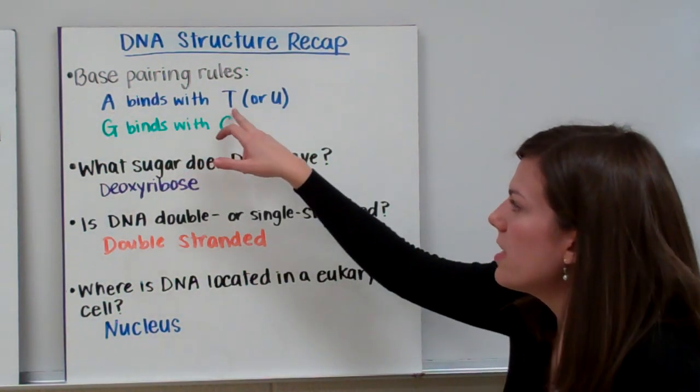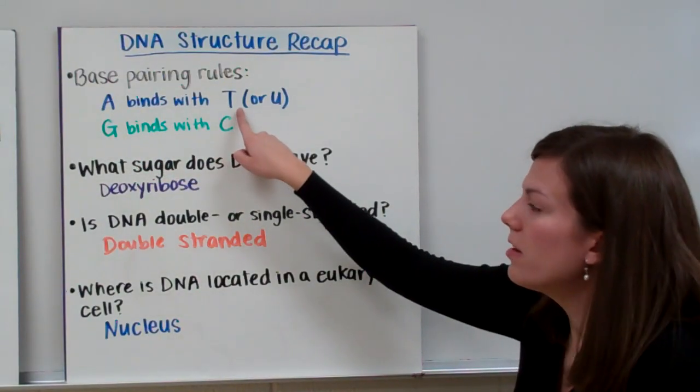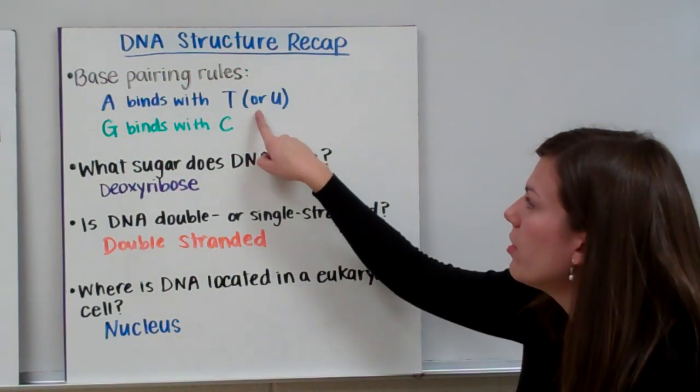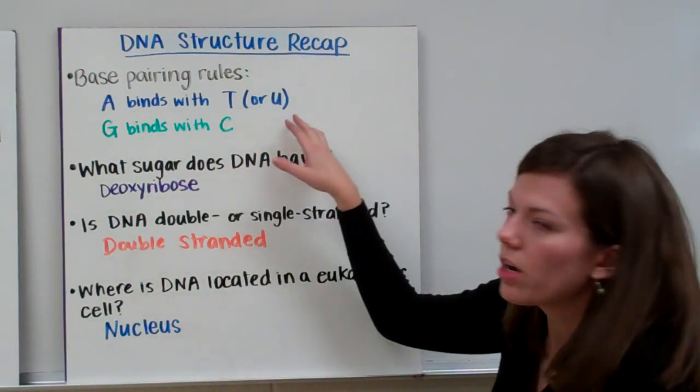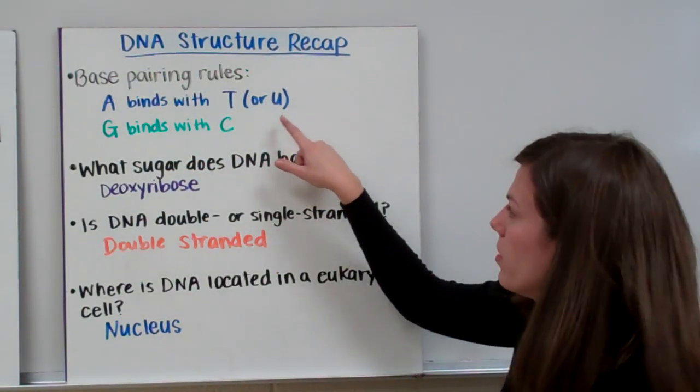A binds with T, so adenine binds with thymine, or uracil. Now we don't have U's in DNA. We only have T's in DNA, no U's. When we talk about RNA, and you can see the RNA video, we'll discuss U's there.